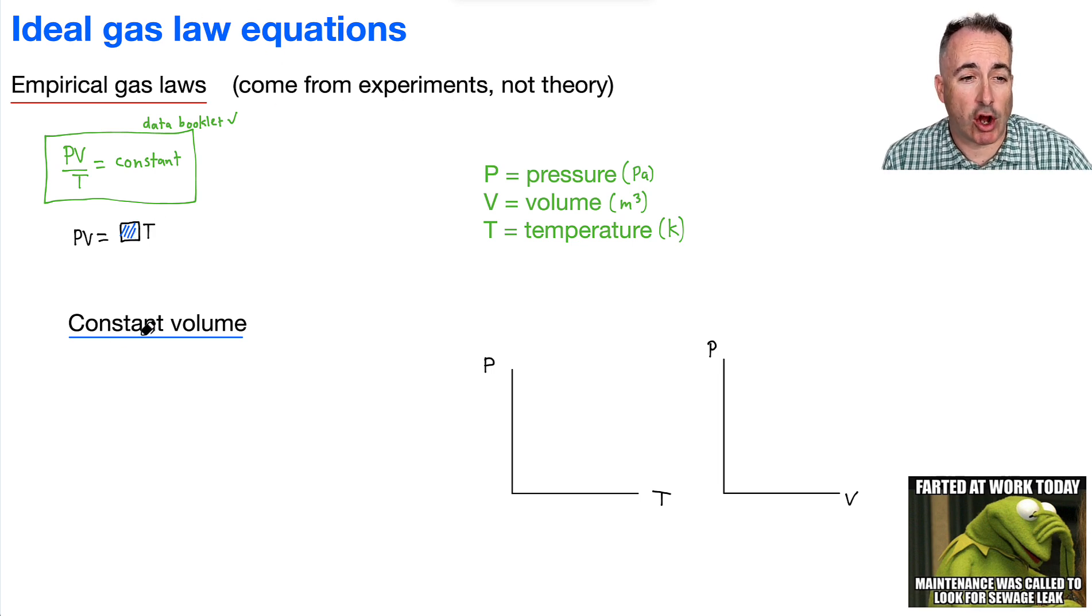So let's consider what happens if we have a constant volume. That's sometimes known as isovolumetric. Iso means same, and volumetric means volume. So we have P times V equals some box times T, and we're saying the volume is going to be constant, so we're going to just kind of ignore it. So that really tells us that the pressure is going to be proportional to the temperature. That's the key thing here. So what does that mean? Well, that means that if we do a graph of pressure versus temperature, as temperature goes up, pressure goes up. In other words, it's going to be something that's linear.